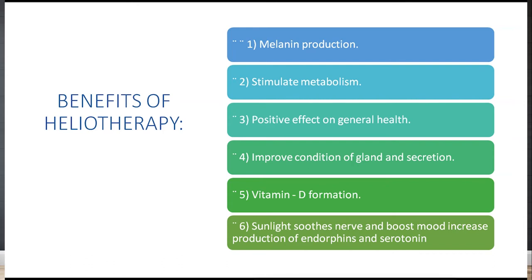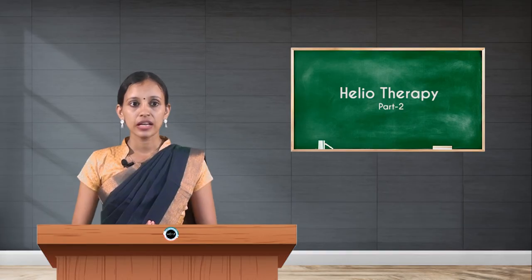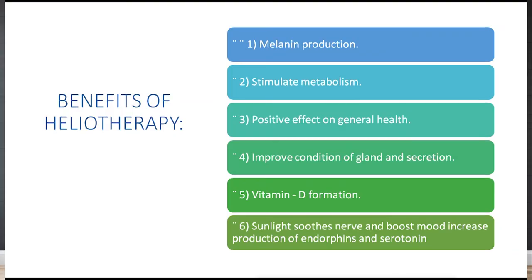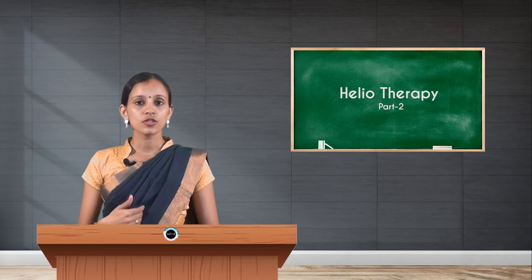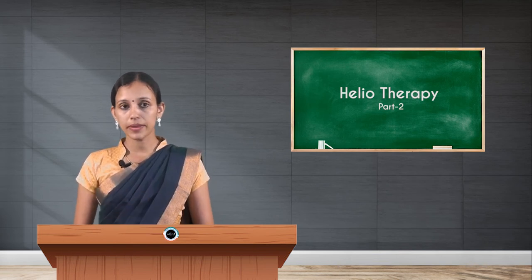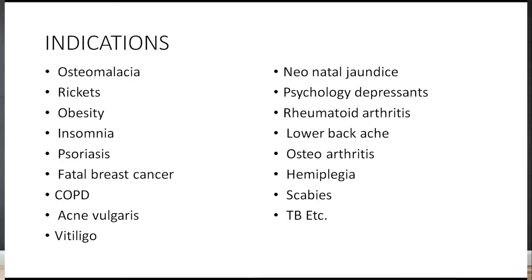The fifth important benefit is vitamin D formation. Vitamin D is very much necessary for the human body, and the main natural source is sunlight. It is also necessary for the proper absorption of calcium in the body. Additionally, sunlight soothes the nerves and increases the production of endorphins and serotonin — the two hormones called happy hormones — because they improve the mood of the individual. We can even advise heliotherapy for depression patients.